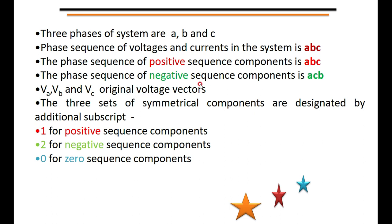Here, Va, Vb, and Vc are the original voltage vectors — unbalanced in nature. The 3 sets of symmetrical components are designated with additional subscripts 1, 2, and 0. So Va is resolved into Va1 (positive sequence), Va2 (negative sequence), and Va0 (zero sequence). Similarly, subscripts 1, 2, 0 are applied to the Vb and Vc components as well.